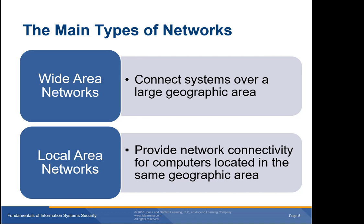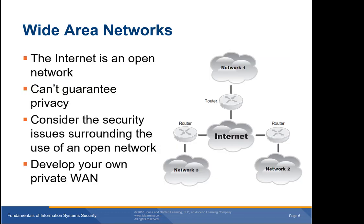We're going to examine the two main types of networks: wide area networks and local area networks, and explore their function. WANs connect systems over a large geographical area. The most common example of a WAN is the internet, which connects many independent networks together, allowing people at different locations to communicate easily. The internet hides the details of this process from the end user.